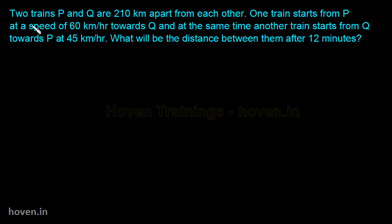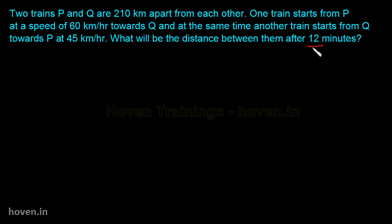In this variation, two trains P and Q are still 210 km apart. One train starts from P at 60 km per hour towards Q, and at the same time another train starts from Q towards P at 45 km per hour. But the question here is: what will be the distance between them after 12 minutes?